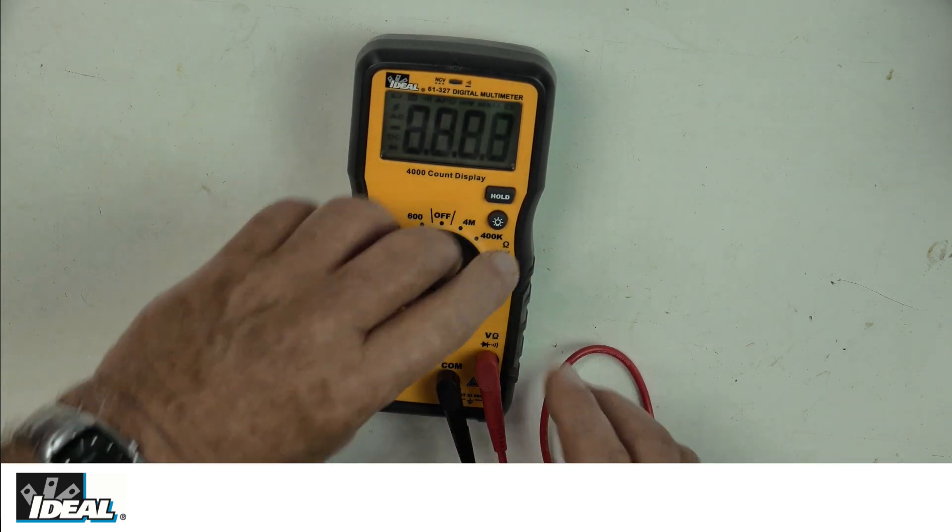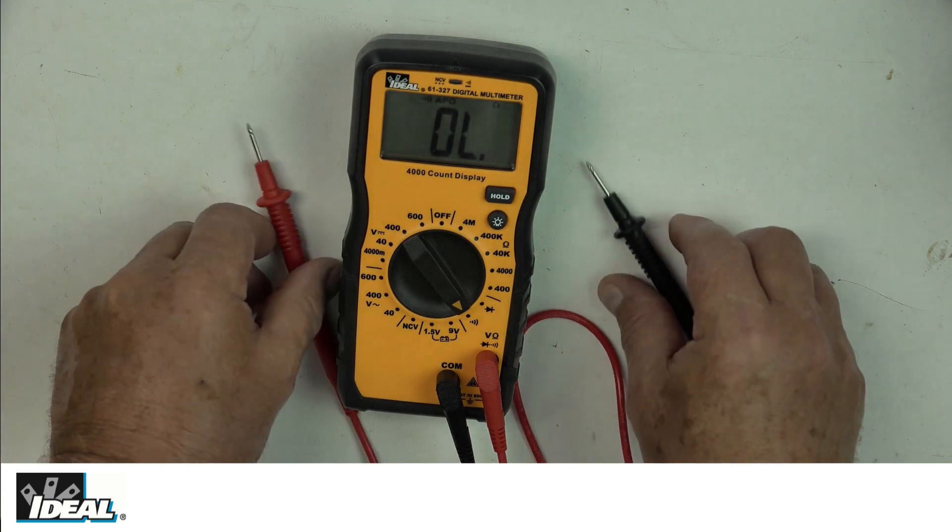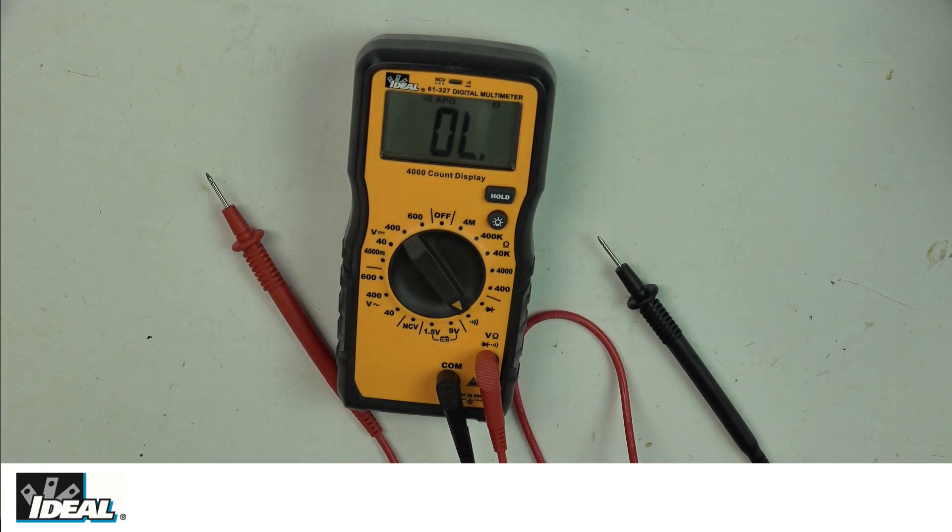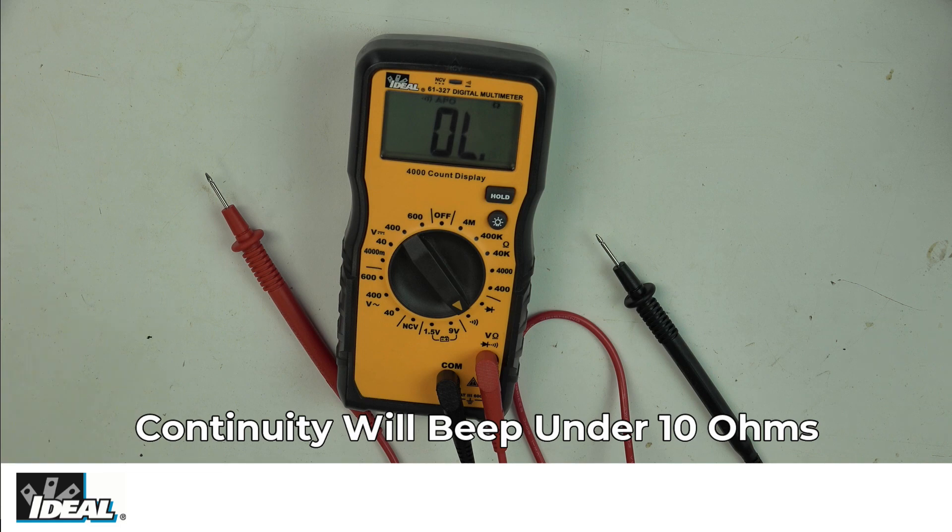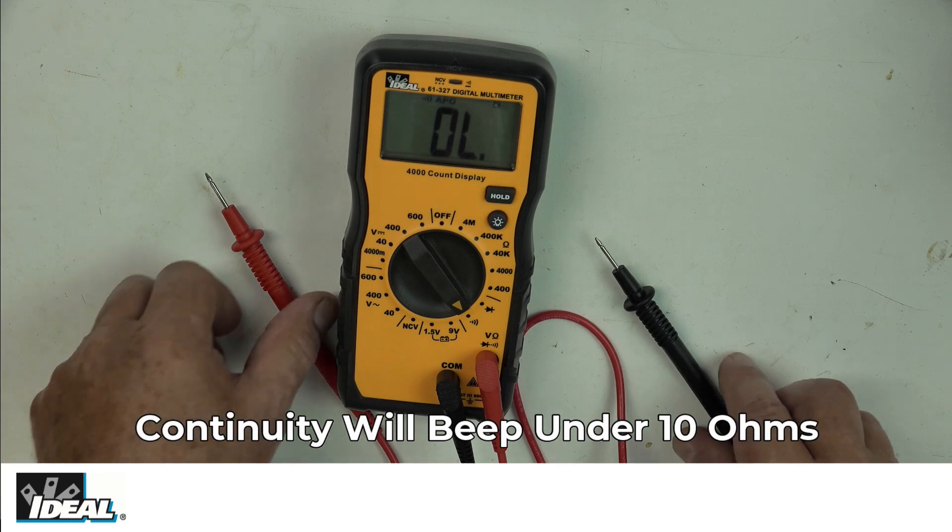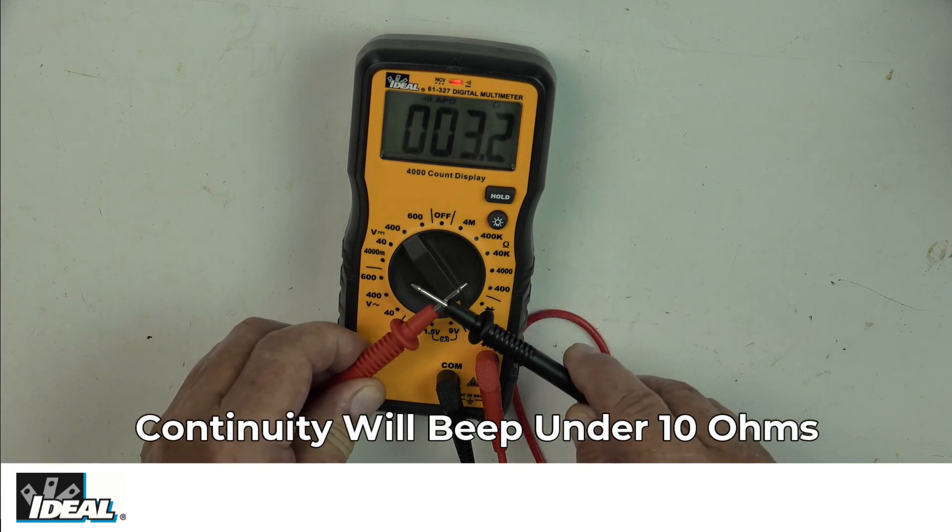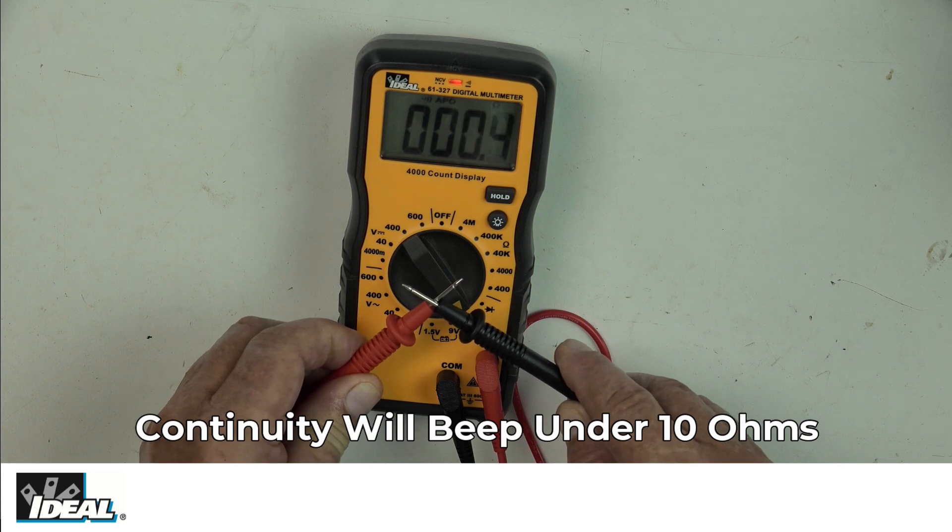Let's talk about continuity. If I put the tester in continuity, you get the audible symbol in the display. Right now it says OL or over limit. It's measuring resistance or ohms in continuity, so continuity is basically measuring ohms. On these testers, anything under 10 ohms or less will give you an audible tone. The meter pretty much zeroed out on us there, which it should, and gives you an audible tone.